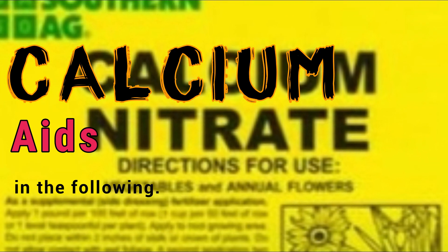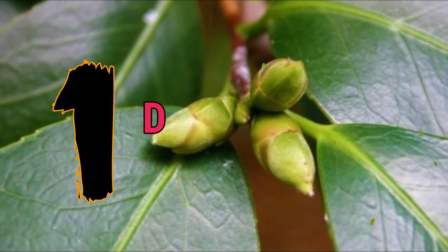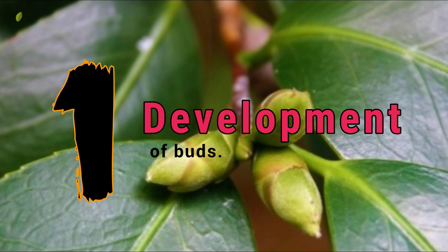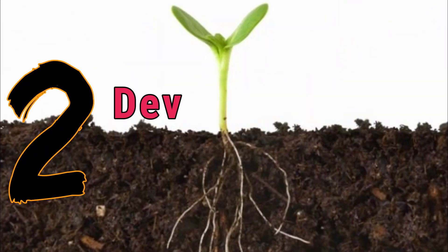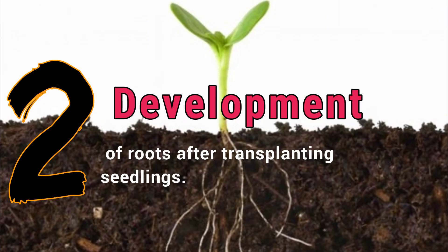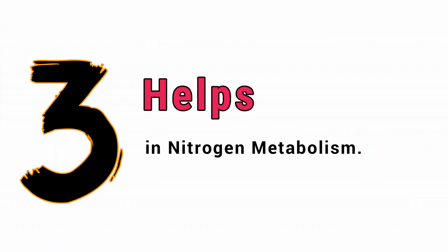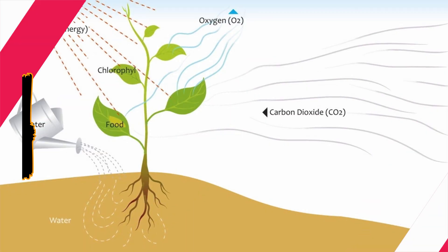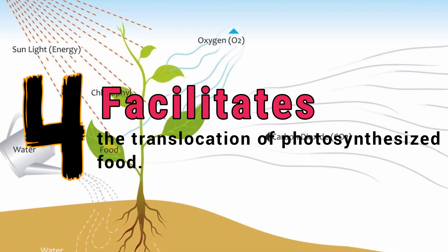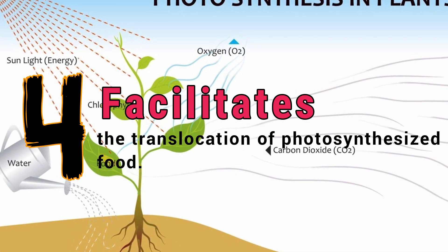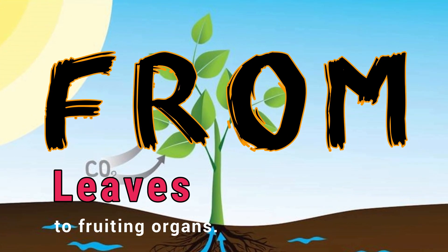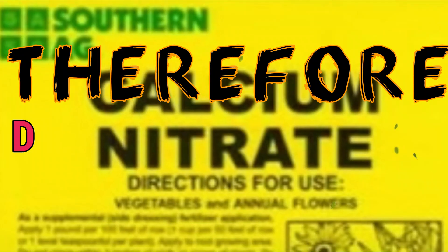Calcium aids in the following: 1. Development of buds. 2. Development of roots after transplanting seedlings. 3. Helps in nitrogen metabolism. 4. Facilitates the translocation of photosynthesized food from leaves to fruit and other organs.